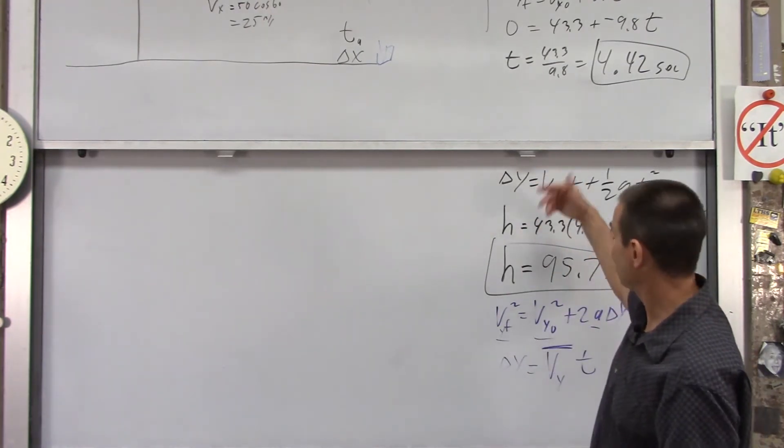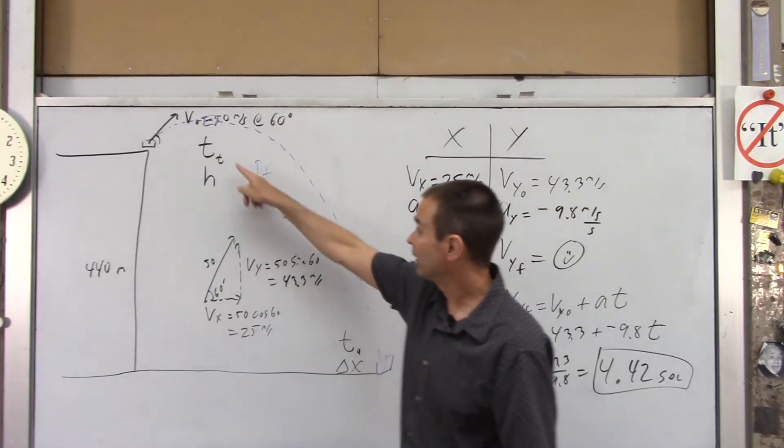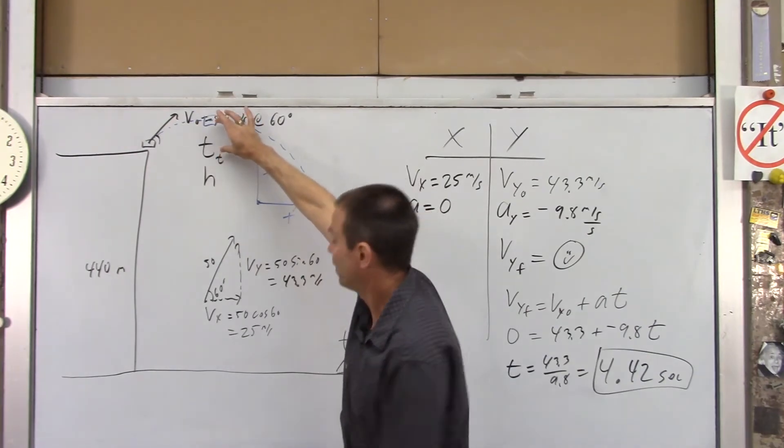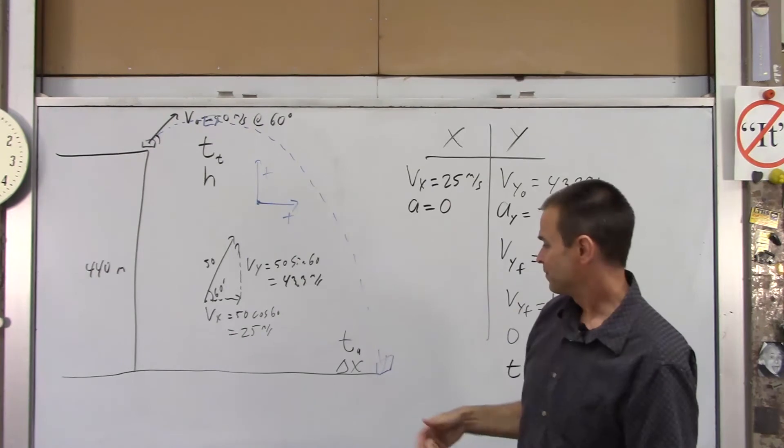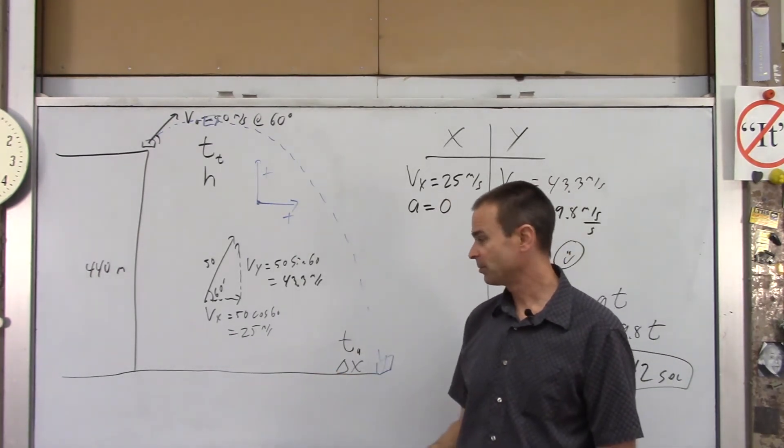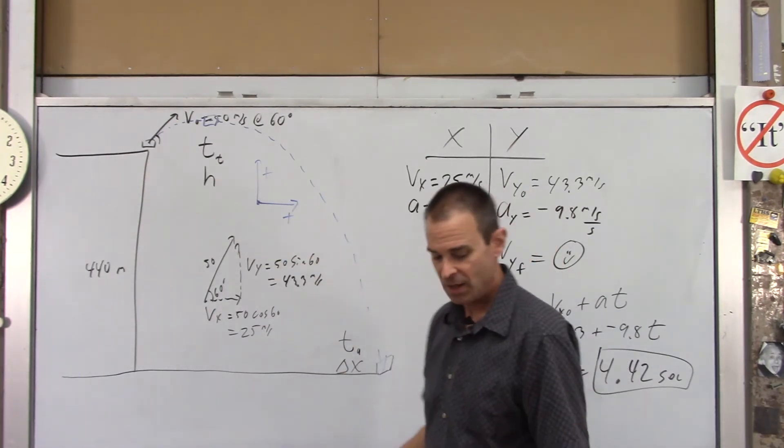So, we got the first two things. We now know how long it takes to get to here and the max height above the launch point and the max height above the ground that it achieves. Finally, how long is it in the air total and how far does it get from the building and how does that compare to just shooting at horizontal?